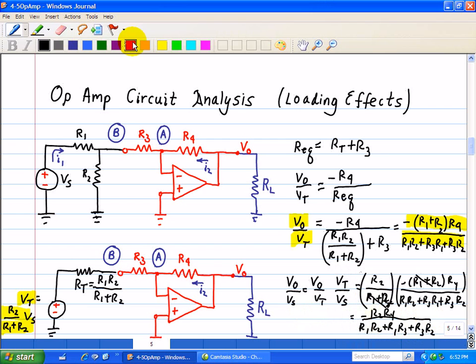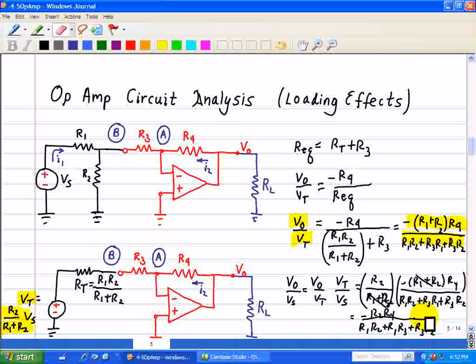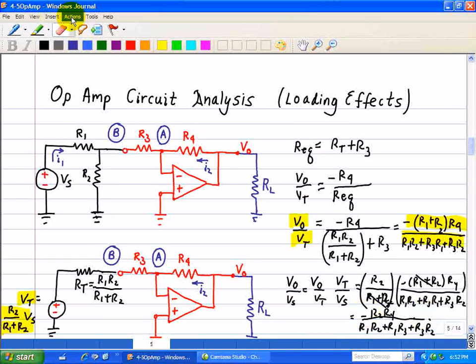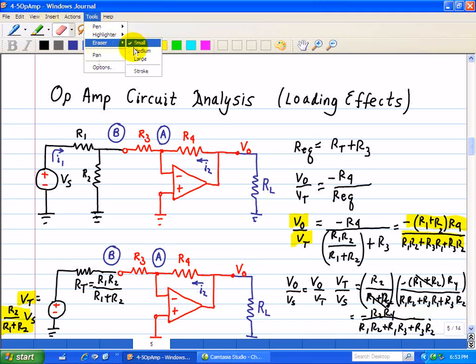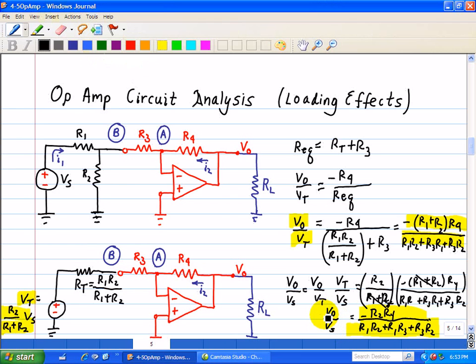And that's our final result, and that's V0 over Vs, which is our constant in this example.